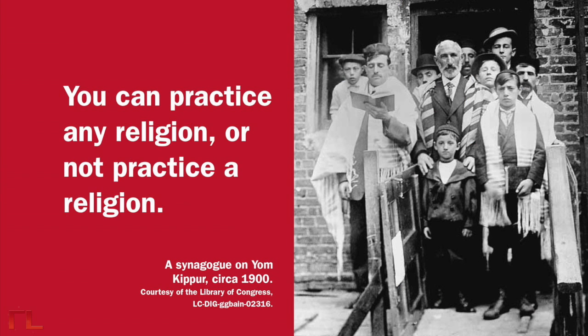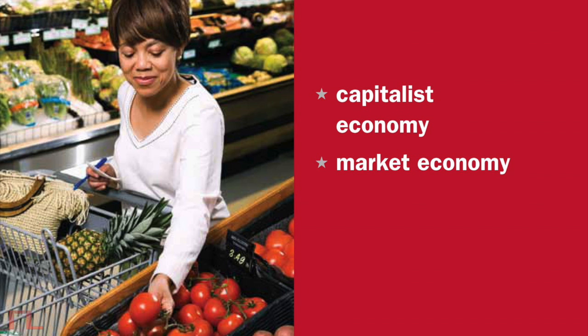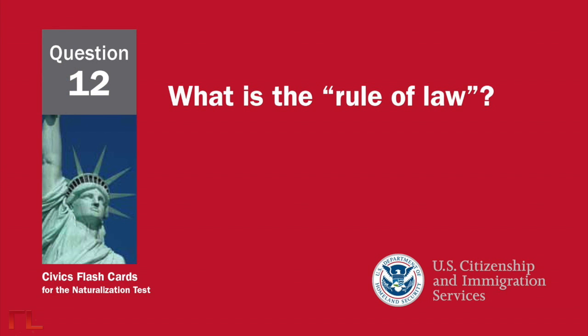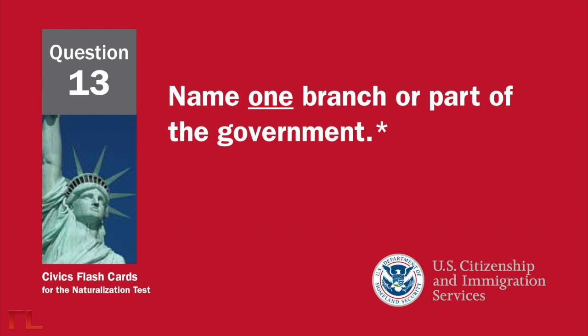What is freedom of religion? You can practice any religion, or not practice a religion. What is the economic system in the United States? A capitalist economy, or market economy. What is the rule of law? Everyone must follow the law. Leaders must obey the law. Government must obey the law. No one is above the law.